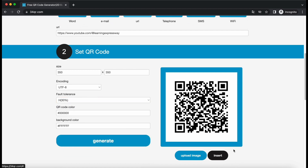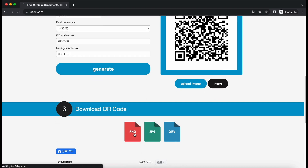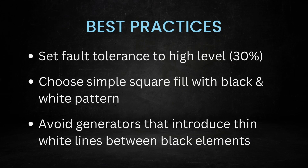Once the QR code is generated, you can download it as a PNG file. To ensure the best results, here are some helpful guidelines: set the fault tolerance to a high level, create the simplest square fill with black and white pattern, and don't use generators that may introduce thin white lines between black elements.